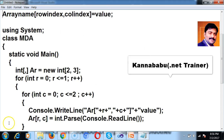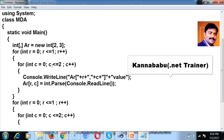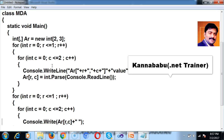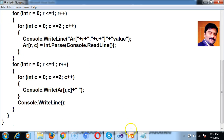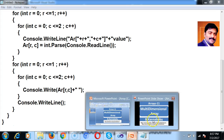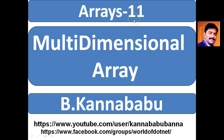This is the multidimensional array program. In total I have written four for loops — two loops to read and store values from the array, and two loops to retrieve and display the values. I hope you understood. For more videos, subscribe to my YouTube channel and Facebook group. Thank you, have a nice day.